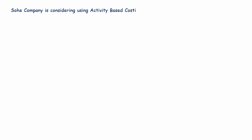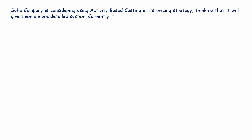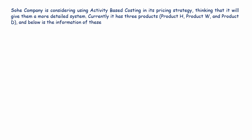SOHI company is considering using activity-based costing in its pricing strategy, thinking that it will give them a more detailed system. Currently, it has three products: product H, product W, and product D. Below is the information of these three products from last year.